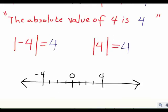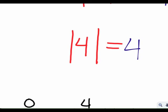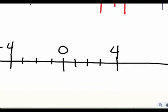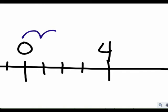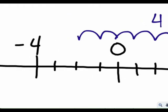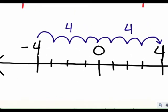Another way to think about what absolute value means is that the absolute value tells you how far away a number is from 0. On my number line, it's pretty clear to see that positive 4 is 4 units away from 0, and negative 4 is also 4 units away from 0. So absolute value — another way to think about it is that it tells you how far away a number is from 0, regardless of the direction that you go in to get there.